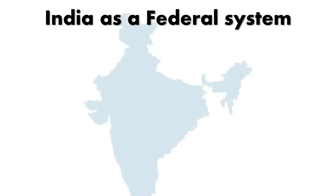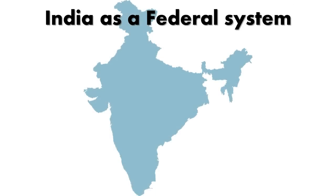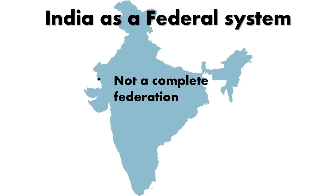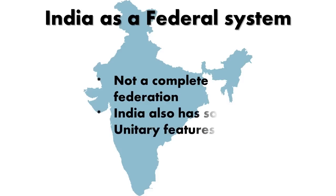By this, we have learned that India satisfies almost all the features of a federal system of government. But we don't and can't call it a complete federation, because India also has unitary features and some other unique features. This means India is more of a federal system of government, but not a complete federation.